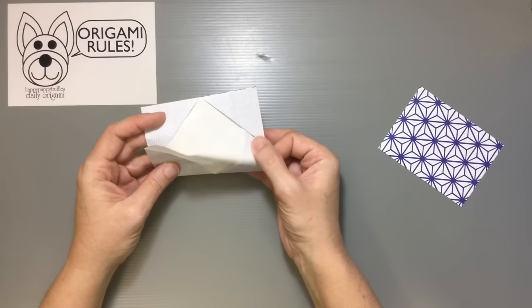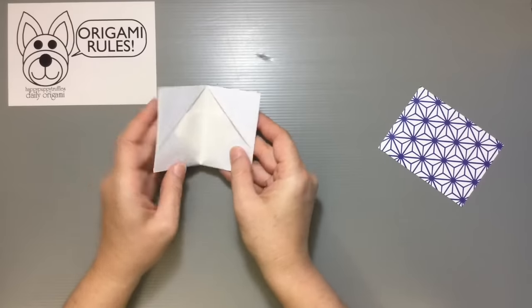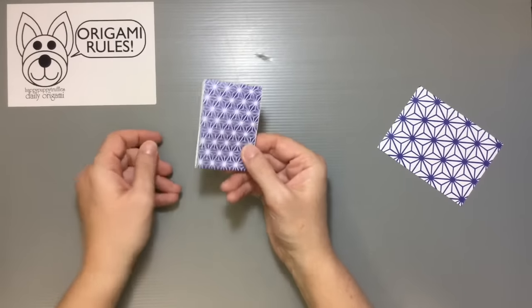Now I'm going to take both of these tabs and just tuck them underneath the opposite side there. And when you fold it in half you'll notice that we have our finished origami.